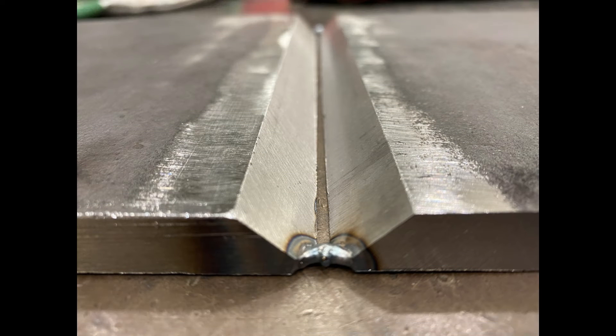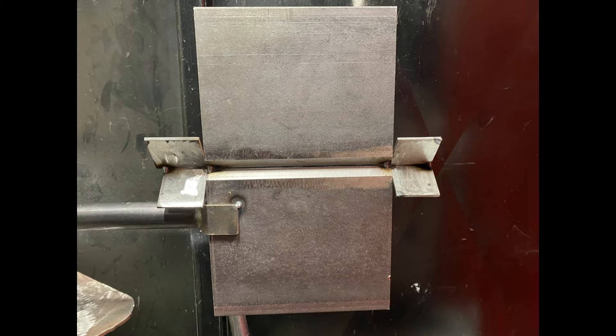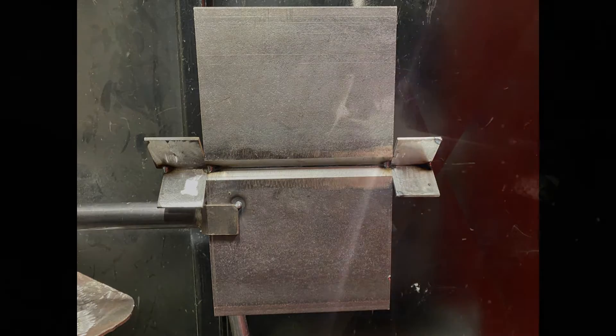In this video we're going to do a 15 millimeter mild steel plate with a 40 degree angle single V prep with a knife edge nose. We're using E6011 cellulosic welding rods, 2.5 millimeters, using 60 to 65 amps.